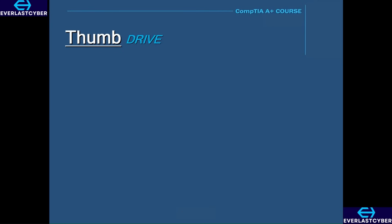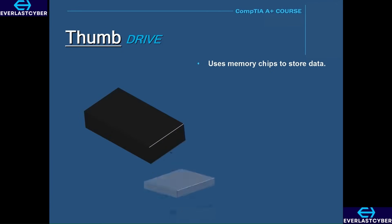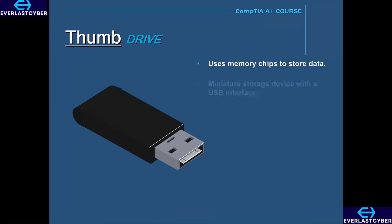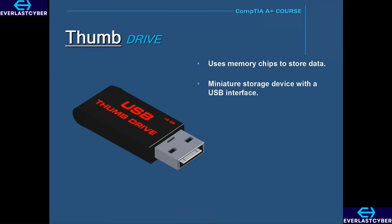Another type of removable storage is called a solid-state disc. These have no moving parts. This type of memory uses memory chips to store data, and these include thumb drives. A thumb drive is a miniature storage device with a USB interface. These devices can store anywhere from 500 megabytes up to 256 gigabytes, and their size is small enough to fit on a keychain. They are a fast and convenient way to store data on the go.